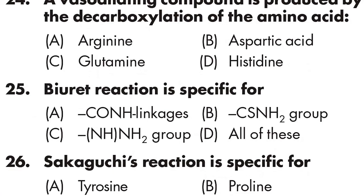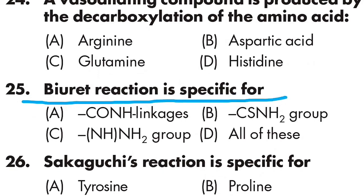Question number twenty-five — the last question: the Biuret reaction is specific for — Option A is CONH linkage, Option B is CS-NH2 group, Option C is NH-NH2 group, Option D is all of these. The correct answer is Option A — the Biuret reaction is specific for the CONH (peptide) linkage. If you found this video helpful, please like and subscribe for more videos.